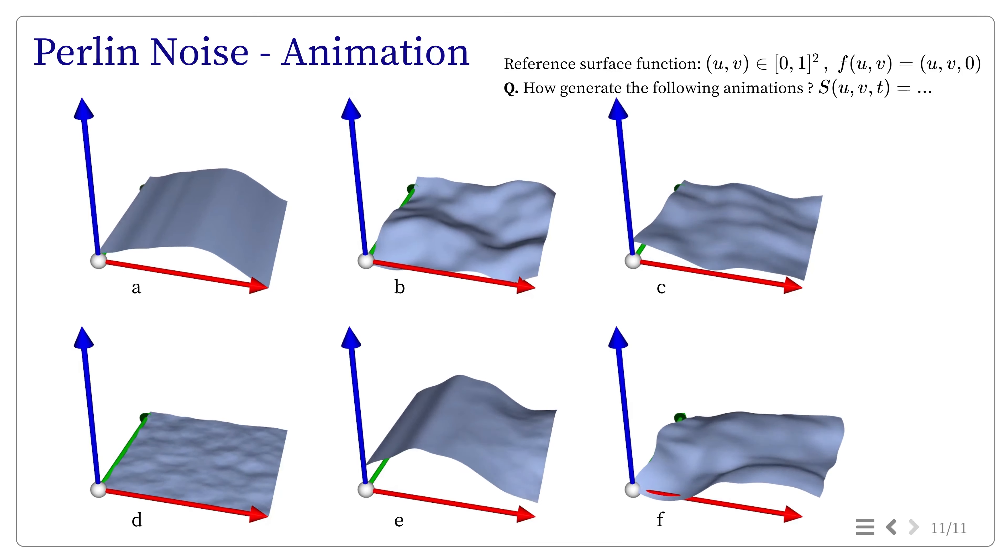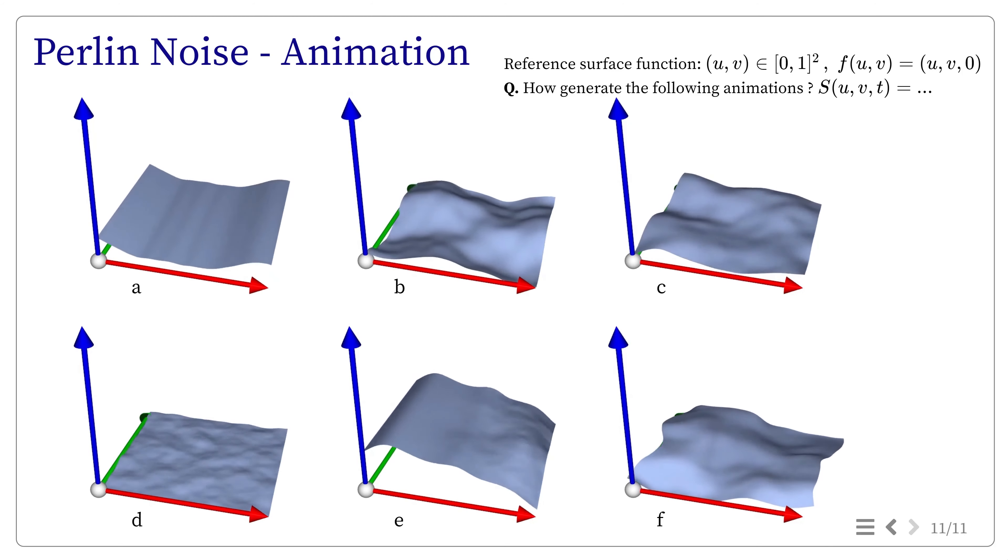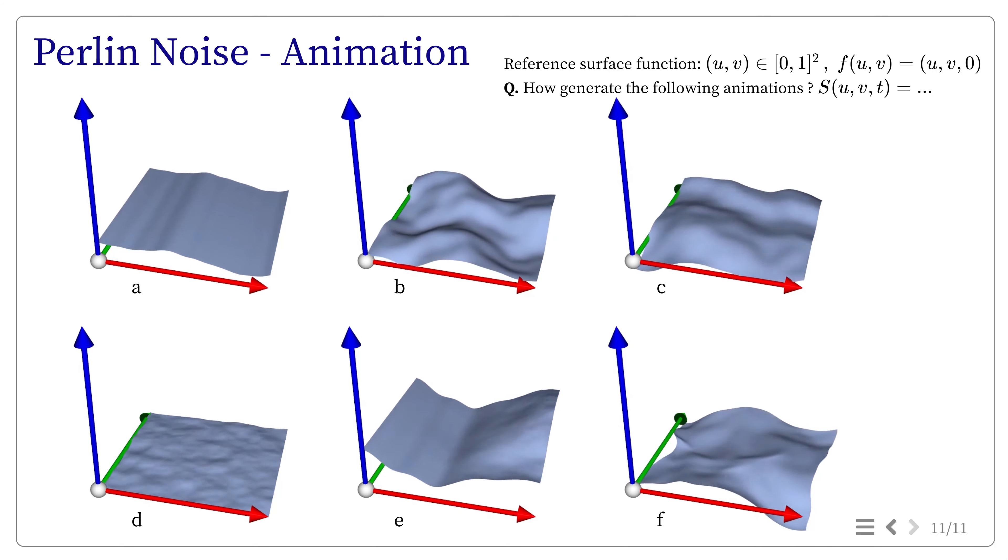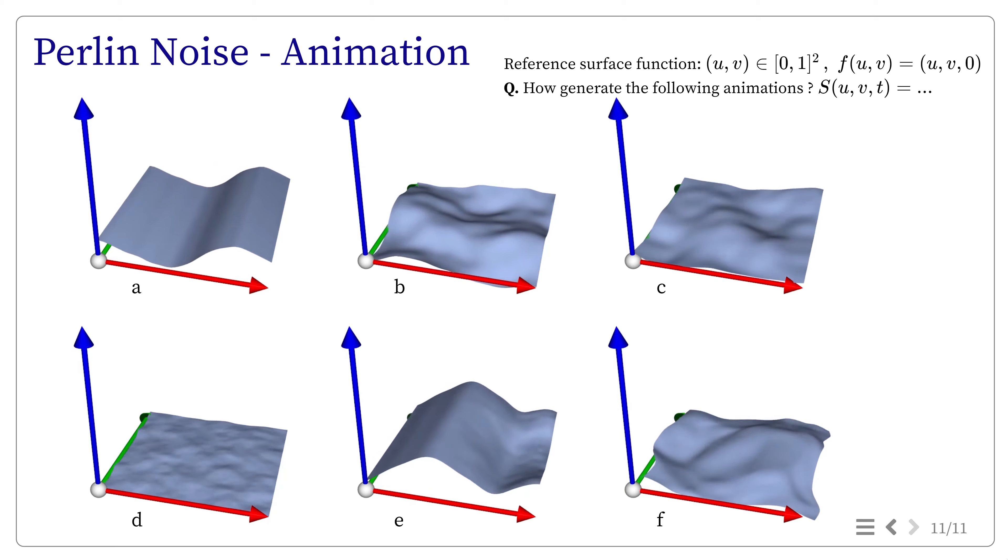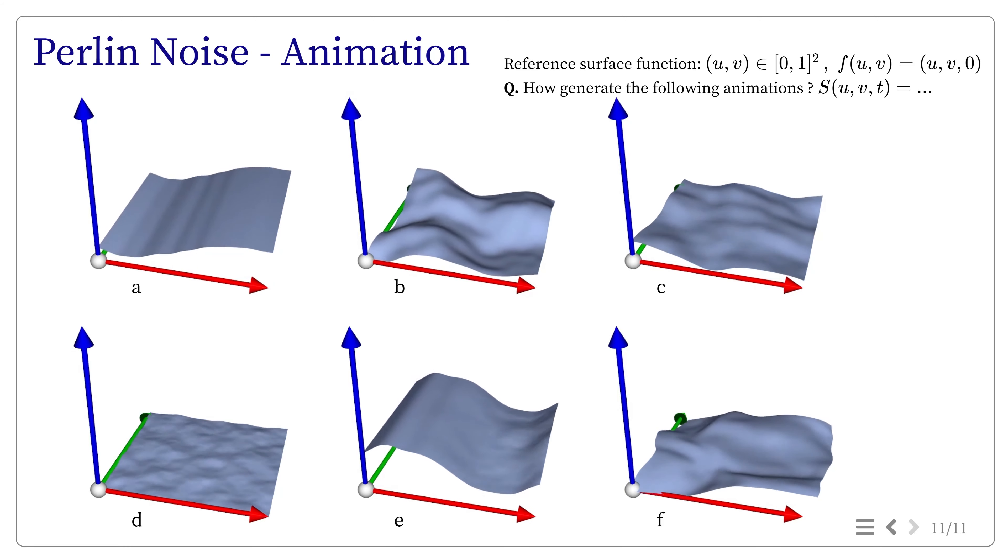And now is the question, how can I generate these animations from a to f using Perlin noise? In particular, which dimension of the Perlin noise I use, think that it can be in 1D, 2D, 3D, and with which parameter u, v and t, which is the time?